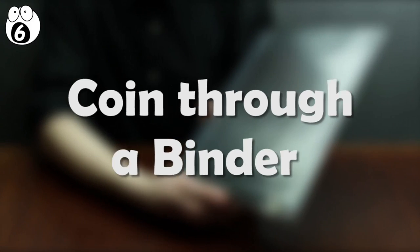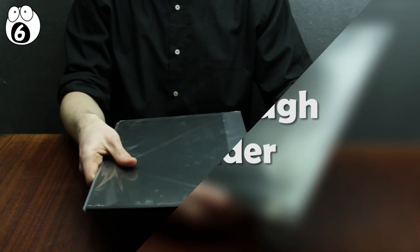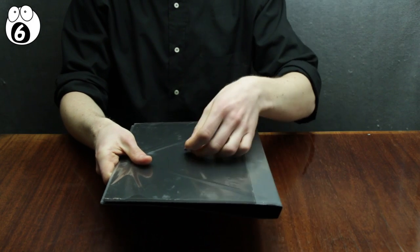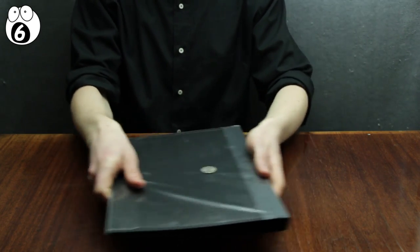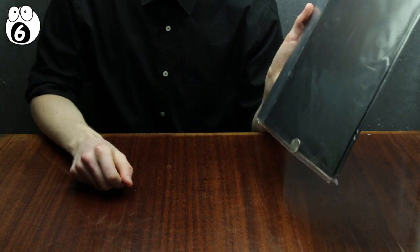Number 6, coin through a binder. This is a regular binder and a coin will be dropped on top of it. Now, watch as it's shaken about. Look carefully and you can see it's managed to trap itself inside the binder.